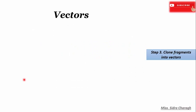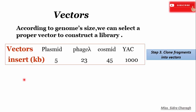Depending on the size of our insert, we then clone DNA fragments into the vector. We select vectors depending on the size of the insert. If our insert is 5 kb, we use a plasmid vector; if 23 kb, we choose bacteriophages; if 45 kb, we select cosmids; and if 1000 kb, we select yeast artificial chromosomes.